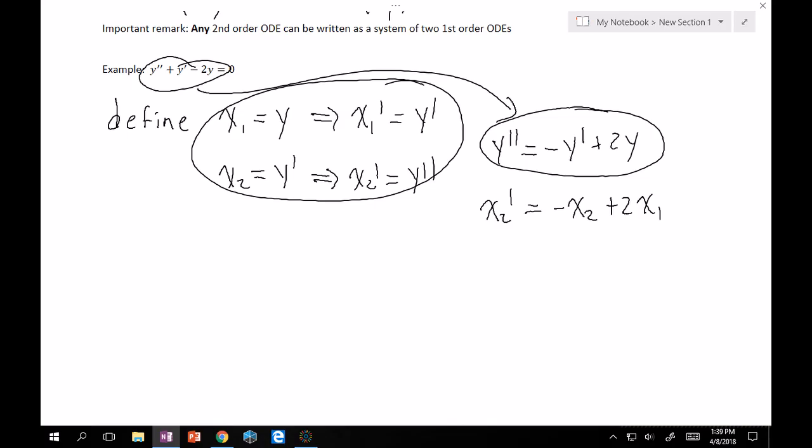Now, if you notice from up above, we wanted an x2 prime equation and an x1 prime equation. So now we just need to ask ourselves, okay, what is x1 prime equal to? And x1 prime is equal to exactly y prime, which we have exactly right here. So that's just equal to x2. Great.